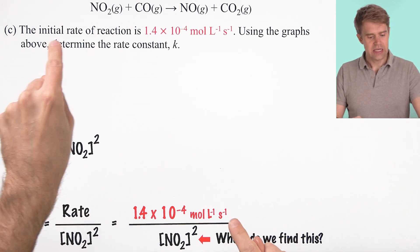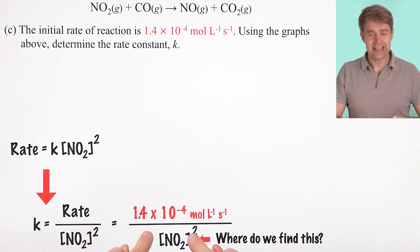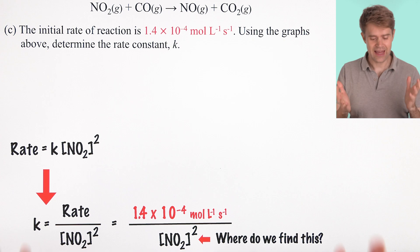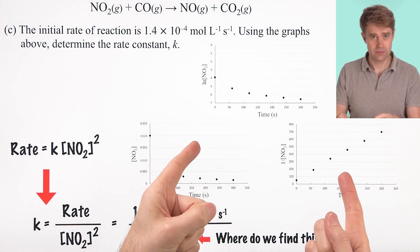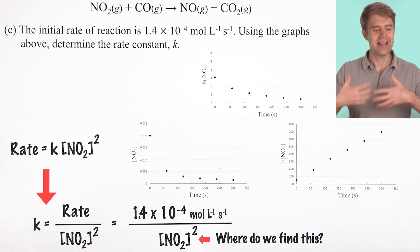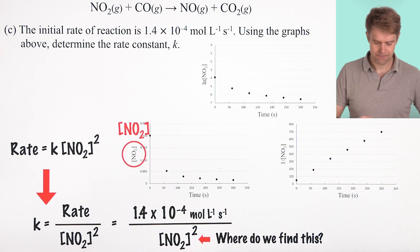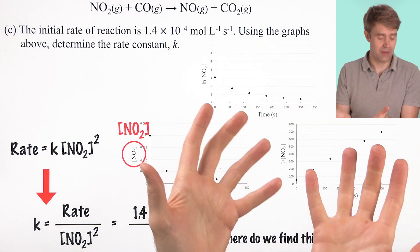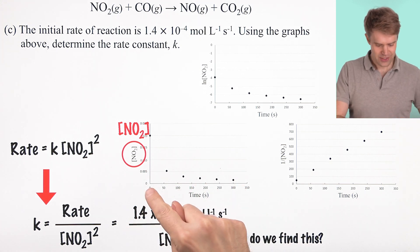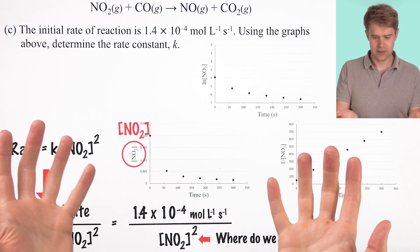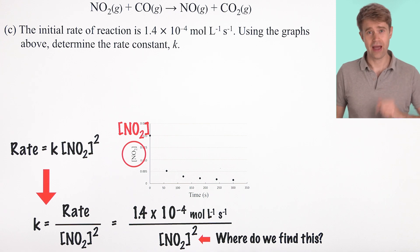Well, this is the initial rate. So we're going to need the initial or starting concentration of nitrogen dioxide. We can get that from the graphs. Each one of these graphs starts at time zero. So we're talking about starting, initial. But which one gives us the initial concentration of NO2 that we need? Well, truthfully, we could get that answer from all three of them, but we'd have to do some extra math.